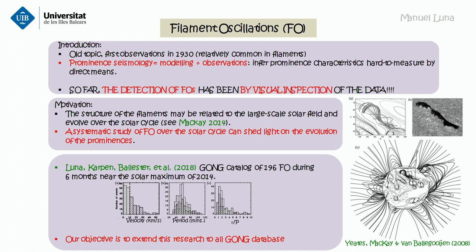We can see here the filament, and the motions are related with these structures. These structures are probably related with the global evolution of the magnetic field of the sun. The differential rotation and the surface motion of the sun produce shearing, producing the flux ropes that, at the end, support the prominence.